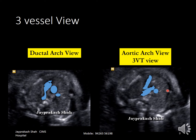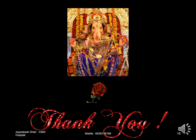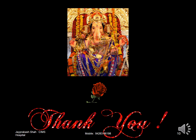Moving the transducer up from the three vessel view you come to the three vessel trachea view, where you see a large V shape. The large arm of the V is the pulmonary artery and the small arm is the aorta. Anterior and to the right side you see the superior vena cava. The V is on the left side of the trachea, so both the ductal arch and the aortic arch are situated to the left of the trachea. Thanks friends — if you like the video, please go to YouTube and the Rajini Fetal Medicine Center channel, subscribe, and press the notification bell so you are notified whenever a new video is uploaded. Thank you.